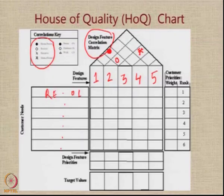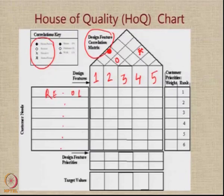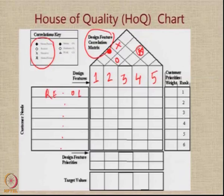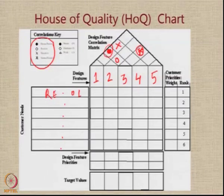If design feature number 5 and number 3 have a negative correlation — meaning providing one adversely affects the other — we put a star mark. If features 1 and 4 have a negative correlation but not a very strong one, we put a cross mark. If this rooftop area is full of asterisk marks, it means the features are trying to cancel each other. On the other hand, if we see many filled circles, that is a very good sign — the features are supporting each other in positive correlation.